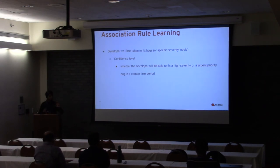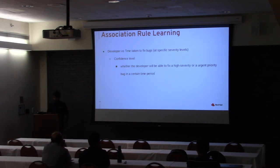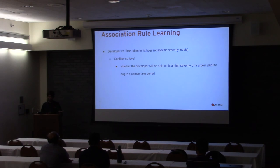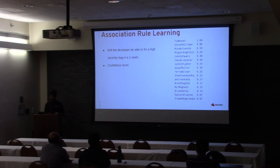Here are some questions I asked with the analysis. You take a developer and ask: what is their time taken to fix bugs? You look at confidence levels, different time intervals — say one week — and ask whether a specific developer will be able to fix an urgent-severity bug in one week's time. Let's see what the analysis returned.